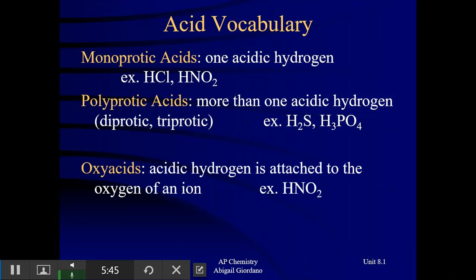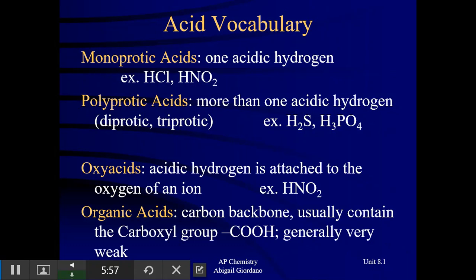Oxyacid — a word you've seen before, though it's been a while. It's exactly what it sounds like: an acid that has oxygen in it. And an organic acid, which really won't come up until organic chemistry, is usually a very weak acid — acids that have carbons, oxygens, and hydrogens.